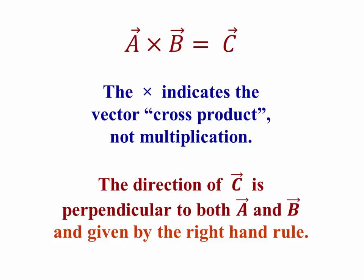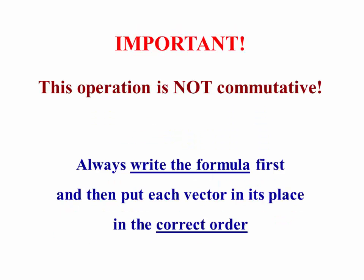The basics are as follows. First, A cross B equals C is a vector product, not multiplication, and that vector C is perpendicular to both of those vectors. Because of the way it's defined, this operation is not commutative. The most important thing to do when doing these problems is to always write the formula you're going to evaluate, define each vector that goes in the formula, and put it in the formula in the correct order. If you don't do that, you'll get the wrong answer, because A cross B is not equal to B cross A.